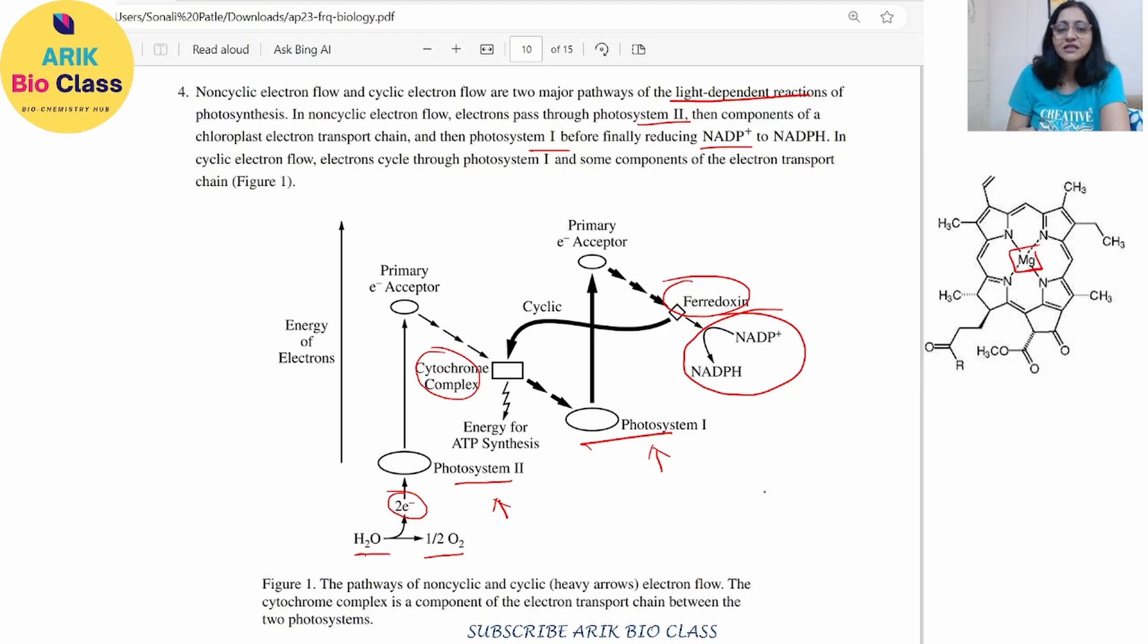we observe that these NADP, the conversion of light energy to the chemical energy takes place. Now chemical energy, when I say chemical energy, that means I am referring to NADH as well as ATP because these are the precursors.